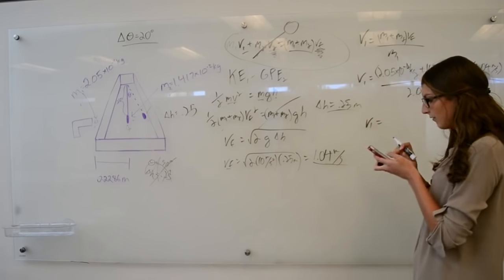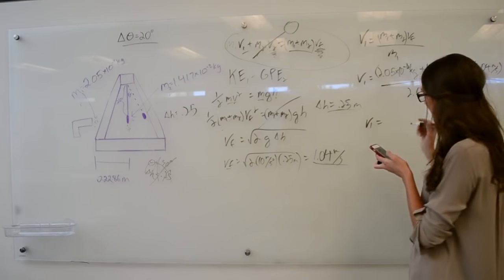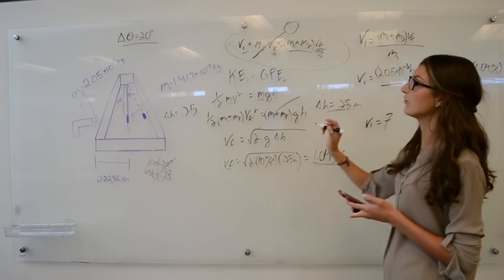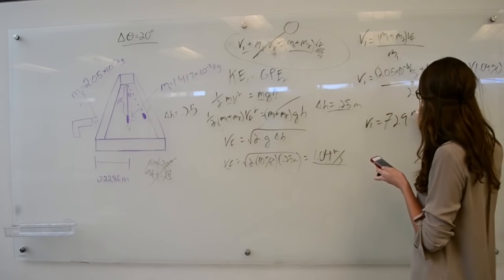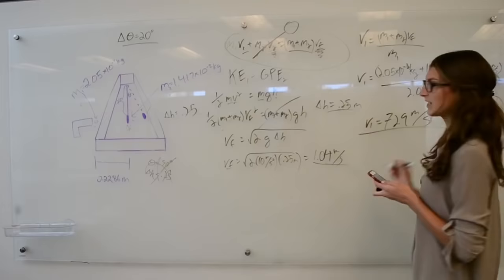If we calculate that, we get that the initial velocity of the bullet is equal to 72.9 meters per second.